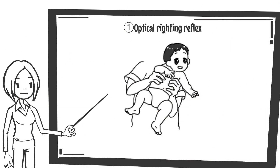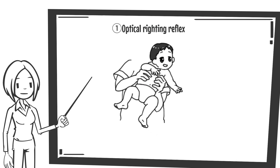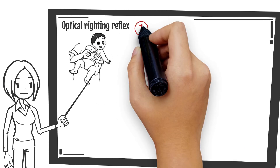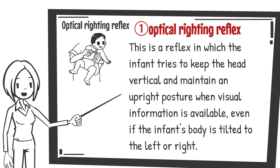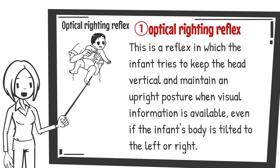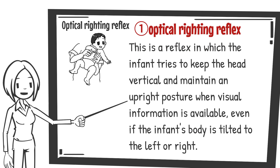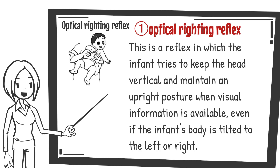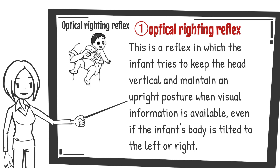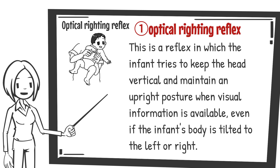The optical righting reflex is a reflex in which the infant's body is tilted to the left or right, but with visual information, the infant's head remains vertical and tries to remain in an upright position. It can be seen from the time the infant is able to sit up, and when the infant sits up and tilts his or her body to the left or right, the infant tries to bring the head back to a vertical position.